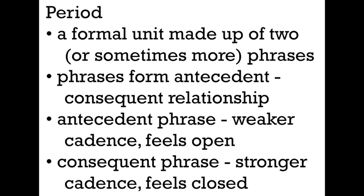We started talking about form as how music is organized — how we can talk about the different elements of music and how they come together to create a piece or composition, and how they create the different musical effects that we hear. Today we're going to be talking about some different types of structural units beyond the ideas of phrase and motive that we already talked about. The first one is an extremely common musical formation that we call a period.